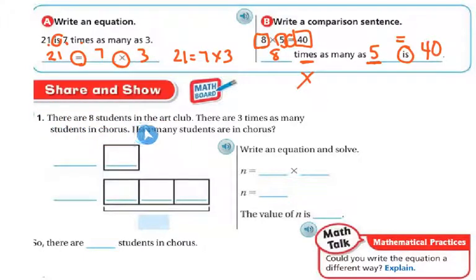Share and show. There are 8 students in the art club, and there are 3 times as many students in the chorus. How many students are in the chorus? Okay, so let's look at what I know. I know that there are 8 students in the art club. Because right here it says, 8 students in the art club. So this is my art club, and there's my 8 students.